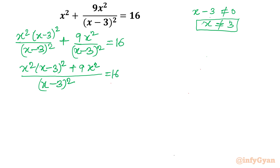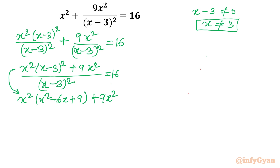Now I will expand the numerator using the formula (a minus b) whole square. So I can write x squared times (x squared minus 6x plus 9) plus 9x squared as the numerator, with the denominator as it is. Expanding further: x power 4, and for the remaining terms I write x squared in bracket (minus 6x plus 9) plus 9x squared.